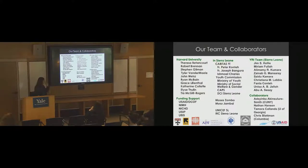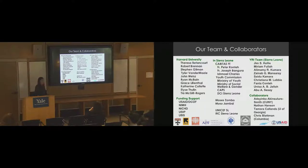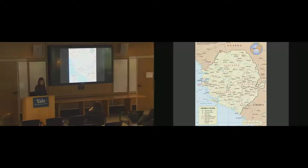In thinking about how to intervene in any one child's mental health, we have to think developmentally and ecologically — drawing on Urie Bronfenbrenner's models. A child's outcome is shaped by genetic factors, age, gender, temperament, and intelligence, but also by family caregiving relationships, extended networks, community access to education, livelihoods, and the macro-level cultural, political, and historical context of the conflict itself.